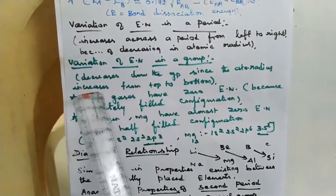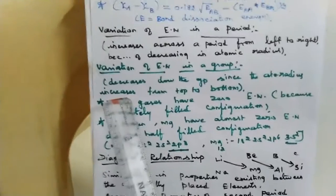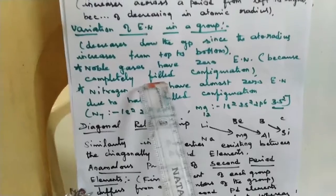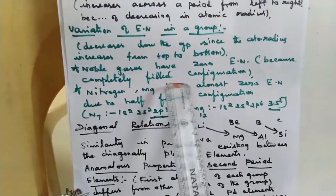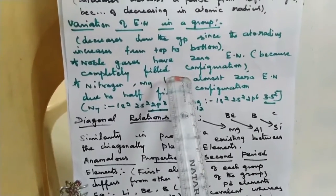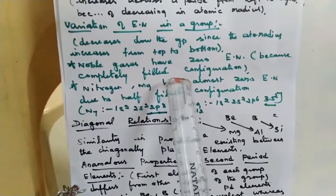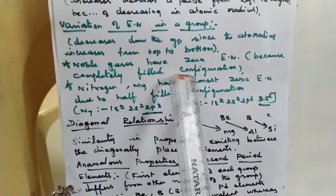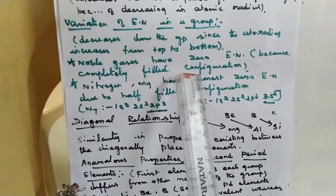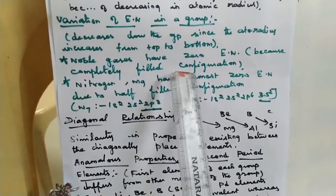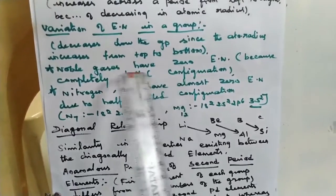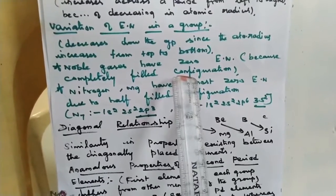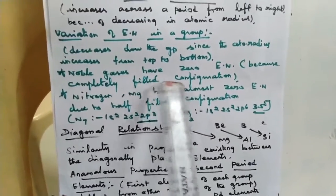Noble gases are the 18th group elements — helium, neon, argon, krypton, and xenon. They have a completely filled configuration of ns² np⁶, meaning 8 electrons are present in their outermost shell. Because of this completely filled configuration, they have no tendency to attract any bonded pair of electrons, and so their electronegativity is considered zero.